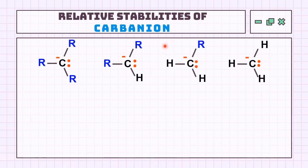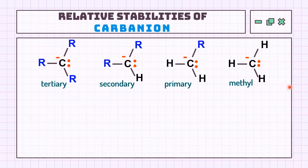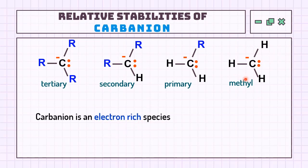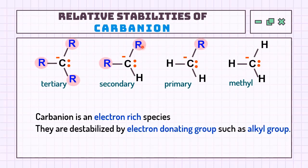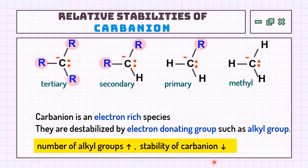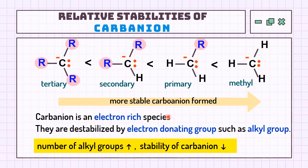Carbanions can be defined as negatively charged ions, where the carbon has a negative charge due to having five valence electrons. Carbanions also have four classes: methyl, primary, secondary, and tertiary. Note that the stability trend is different from the previous two species, because carbanions are electron-rich. Since more alkyl groups keep adding electrons to an already electron-rich species, the presence of alkyl groups destabilizes the carbanion. Therefore, the stability order increases as: methyl > primary > secondary, and the least stable is tertiary.